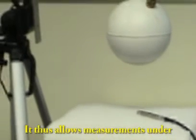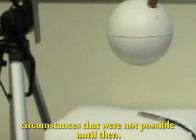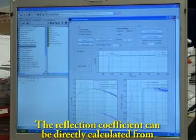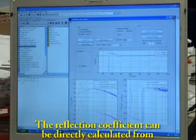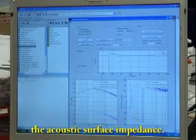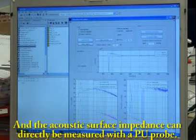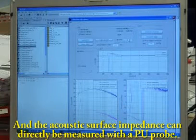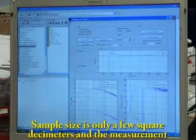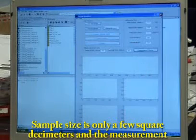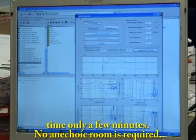It allows measurement under circumstances that were not possible until then. The reflection coefficient can be directly calculated from the acoustic surface impedance and the acoustic surface impedance can directly be measured with a PU probe. Sample size is only a few square decimeters and the measurement time only a few minutes.